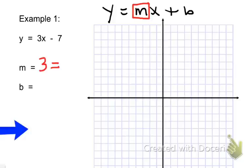I'm going to rewrite 3 as a fraction because I'm going to want to remember to use slope as rise over run. So the fraction that's equal to 3 is 3 over 1.